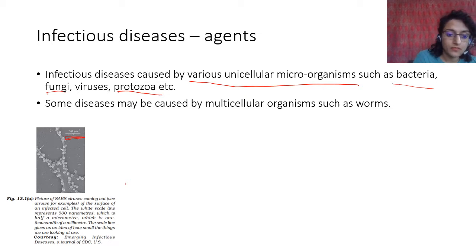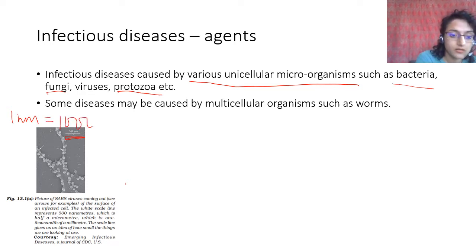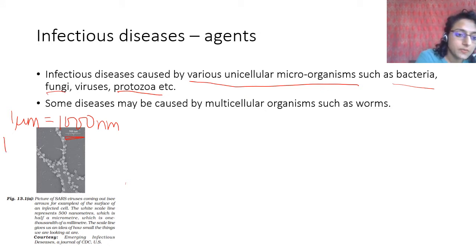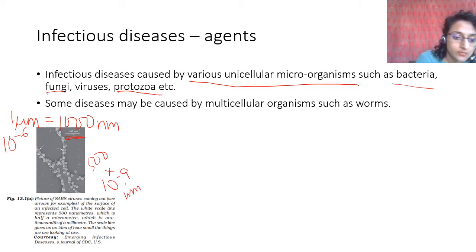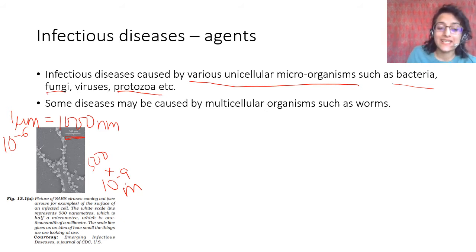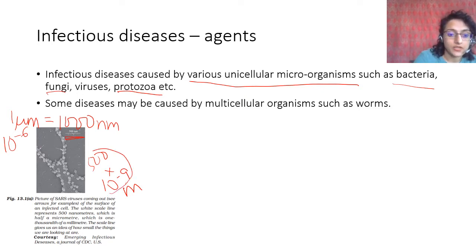What is one nanometer? One micrometer is 1000 nanometers. One micrometer is 10 to the power of minus 6 meters. So 500 nanometers is 500 × 10⁻⁹ meters — that is how small these viruses are. The scale bar shows just how tiny these structures are.